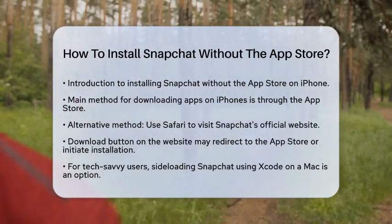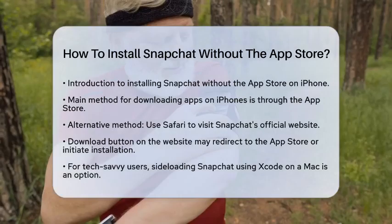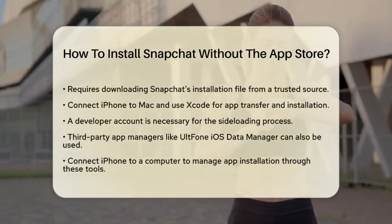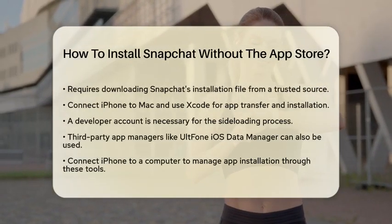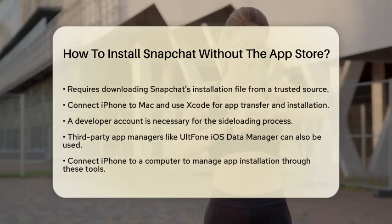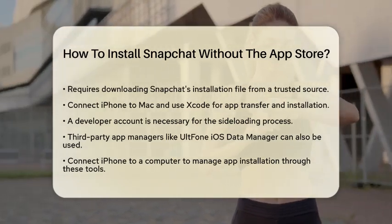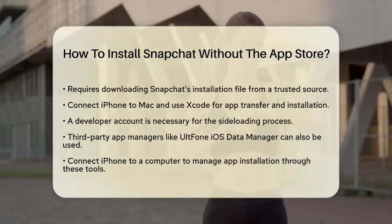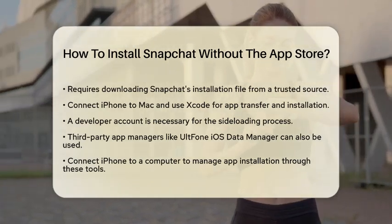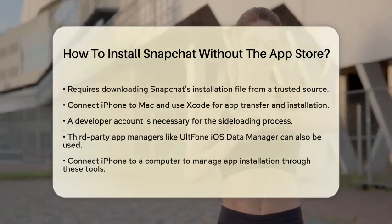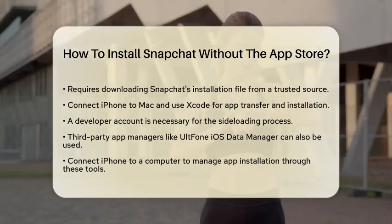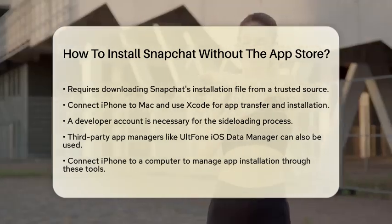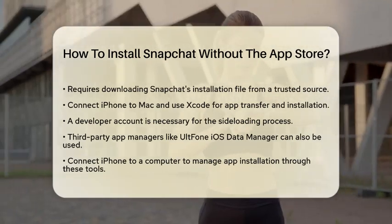If you are more technically inclined, you can sideload Snapchat using developer tools like Xcode on a Mac. This method involves downloading the Snapchat app's installation file from a trusted source. After that, connect your iPhone to your Mac and use Xcode to transfer and install the app. Keep in mind that you will need to log into a developer account to complete this process.